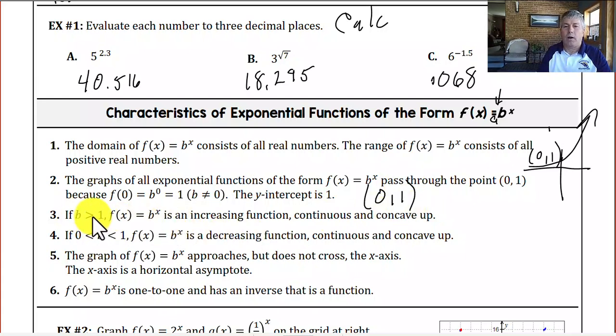If b is greater than 1, our function is increasing, continuous and concave up. It is a growth function. And if b is a fraction between 0 and 1, our function is decreasing and continuous and concave up as well, and that is an example of a decay function.